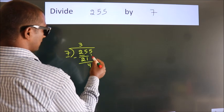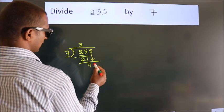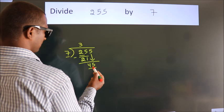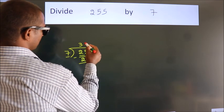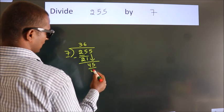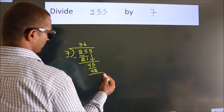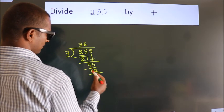After this, bring down the beside number. So 5 down. So 45. A number close to 45 in 7 table is 7×6, 42. Now we subtract. We get 3.